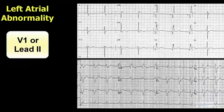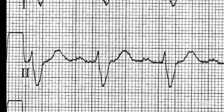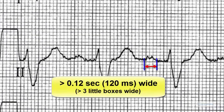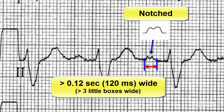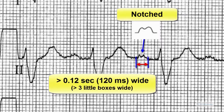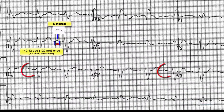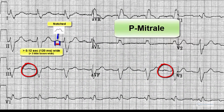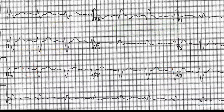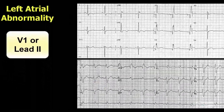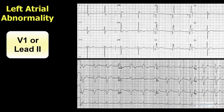In lead 2, as in this other electrocardiogram, the P wave may be greater than 0.12 seconds wide and is usually notched. This may also be seen in lead AVF and lead 3. This pattern in the past was referred to as P mitrale. It is not necessary to have both criteria present for the ECG to be read as left atrial abnormality.